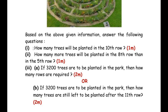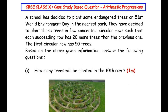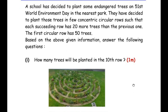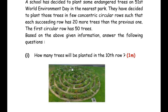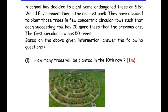A school has decided to plant some endangered trees on World Environment Day in the nearest park. They have decided to plant those trees in a few concentric circular rows such that each succeeding row has 20 more trees than the previous one. The first circular row has 50 trees. Based on the given information, answer the following questions. The first question is: how many trees will be planted in the 10th row?